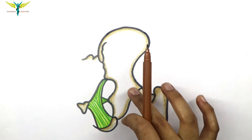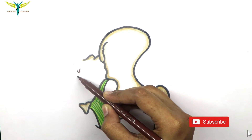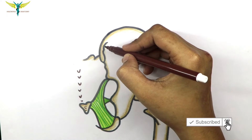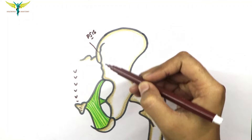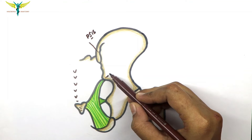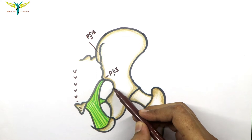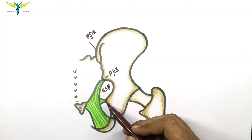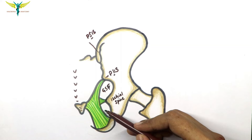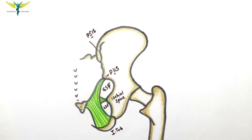In this video we are going to talk about the gluteal ligaments. In this picture, this is the sacrum — the sacral bone — and this is the coccyx. Here will be the posterior superior iliac spine, this is the superior one, and this is the posterior inferior iliac spine. This foramen here is the greater sciatic foramen, this spine-like structure is the ischial spine, and this is the lesser sciatic foramen, and this tuberosity is the ischial tuberosity.